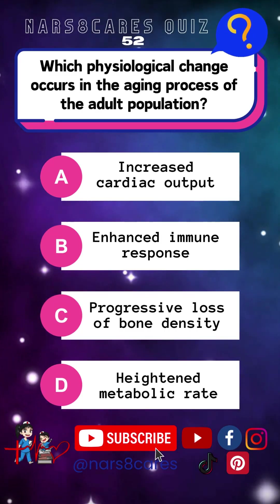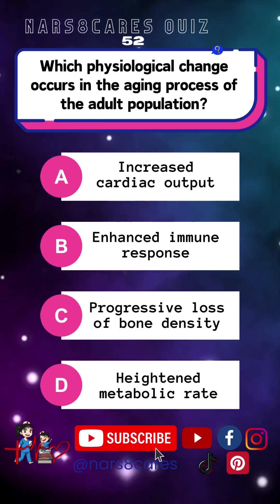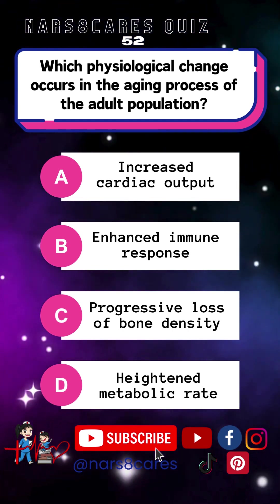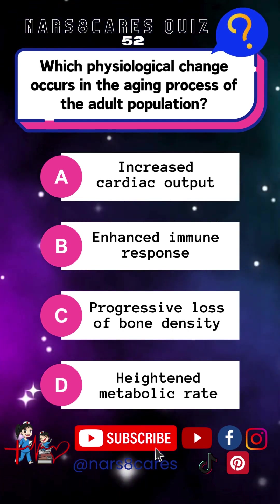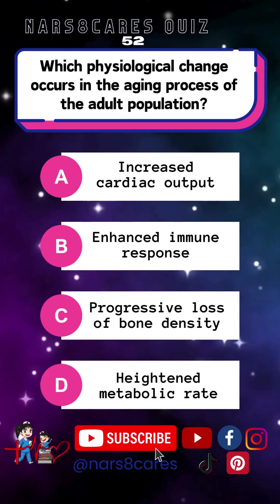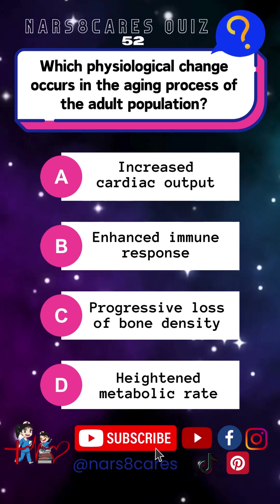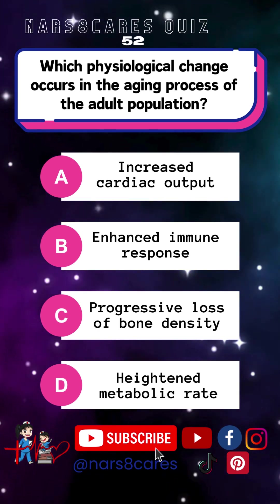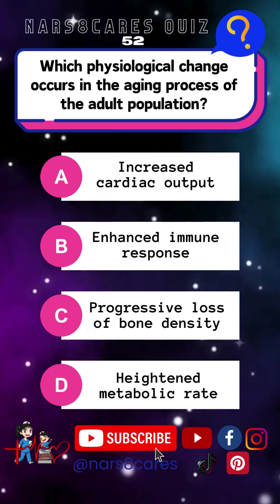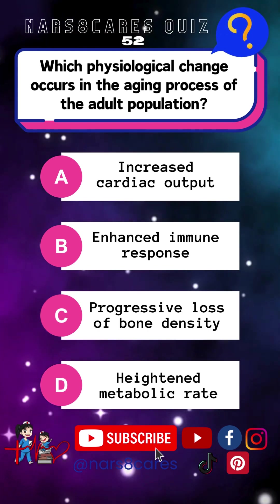52. Which physiological change occurs in the aging process of the adult population? A. Increased cardiac output. B. Enhanced immune response. C. Progressive loss of bone density. D. Heightened metabolic rate.